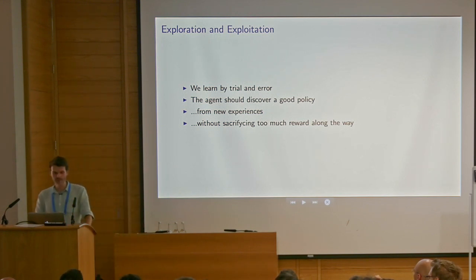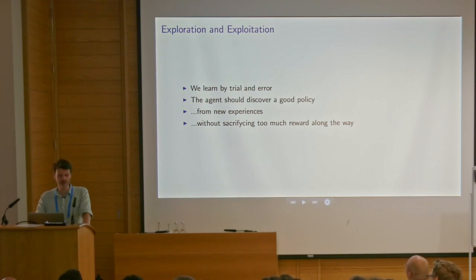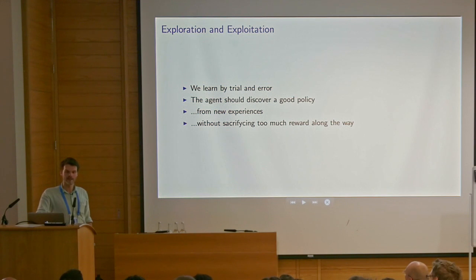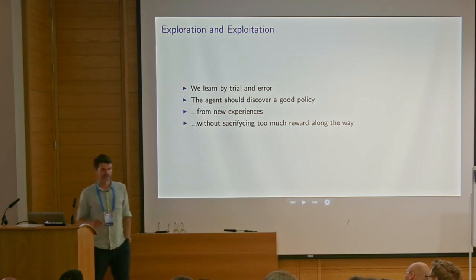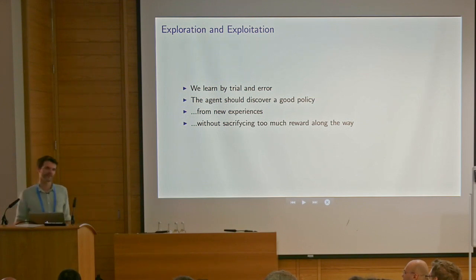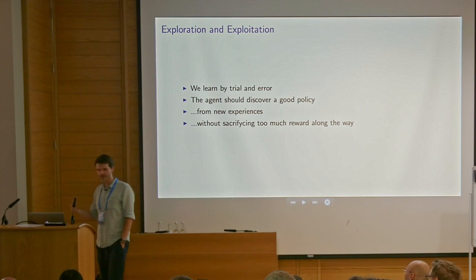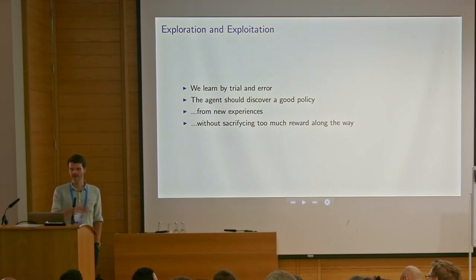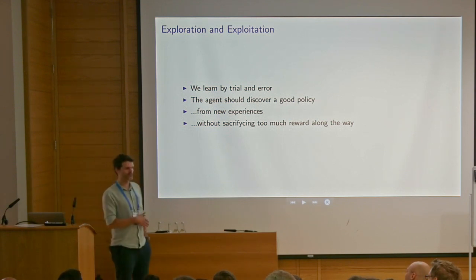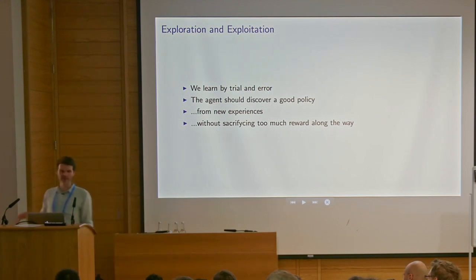In order to learn we must get useful information. One very important challenge and current active area of research in reinforcement learning is the topic of exploration and exploitation. The idea is that we want to learn by trial and error — learn by interaction. The agent should discover a good policy from new experiences without sacrificing too much reward along the way. The exploration part is trying to discover new things to build more information — to build good internal value functions and policies. But if you explore too much your performance will be quite poor, and you may only see an uninteresting part of the state space.